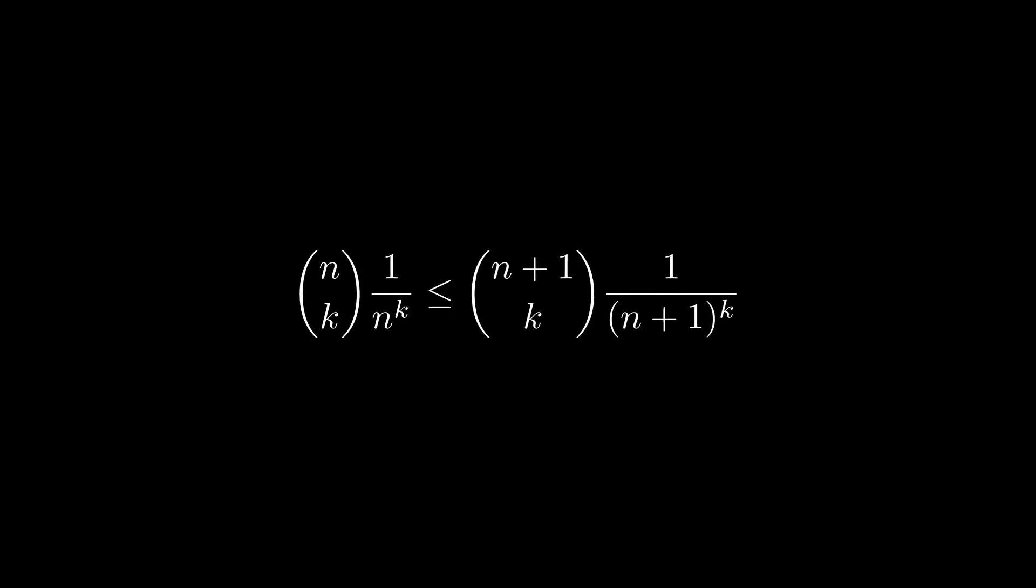Let's rearrange so we're dealing with only integers again. A proof of this last inequality will suffice to show that the sequence is monotonically increasing. It's also an interesting inequality in its own right. We're going to prove it in the same way as before, by constructing a set for each side and showing that the left set can be injected into the right.